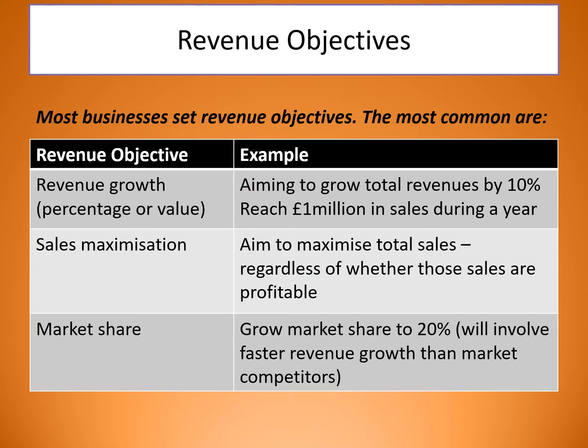Looking at objectives themselves — we've got revenue objectives, usually set quite early by most businesses. Revenue growth could be as a percentage or a value — for example, aiming to grow total revenue by 10% or to reach £1 million in sales during a year. Then you've got sales maximization — aiming to maximize total sales, going for volume rather than value. And then market share — to grow market share to 20%, which could involve faster revenue growth than market competitors.